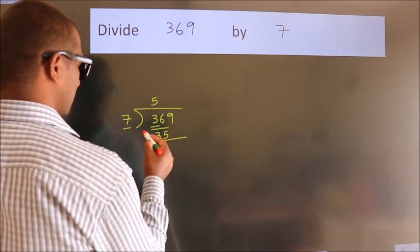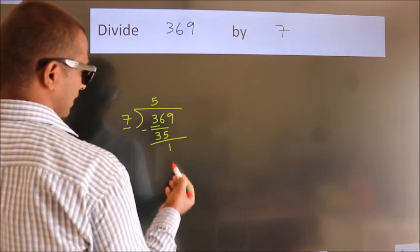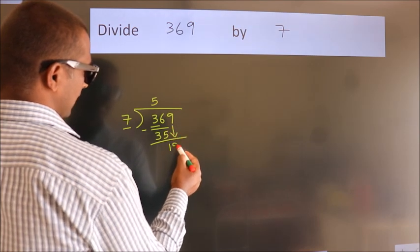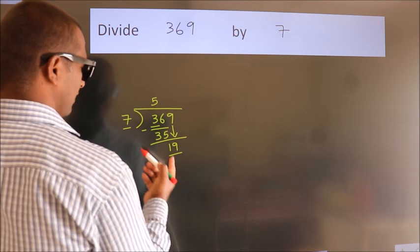Now we should subtract. We get 1. After this, bring down the beside number, so 9 down, so 19.